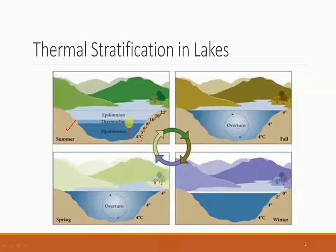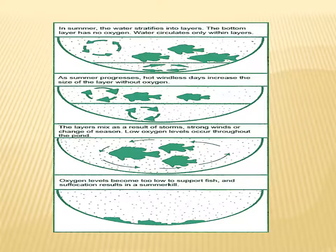Now let us understand what happens to organisms during the summer season. The topmost layer is epilimnion, and at that place aquatic habitat cannot survive. The next region is metalimnion and hypolimnion. Due to no proper mixing of the lake, there is no survivability of organisms in these regions. In the end, due to less availability of oxygen, it kills the aquatic habitat. So those conditions are not favorable for the survivability of organisms.